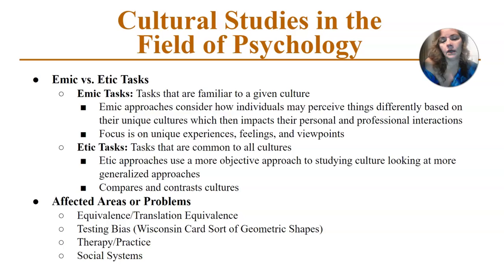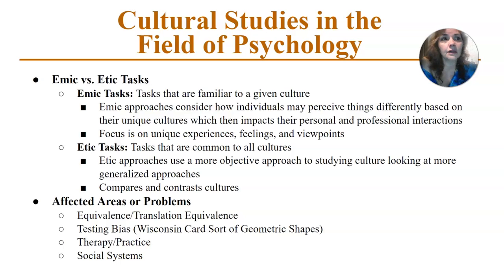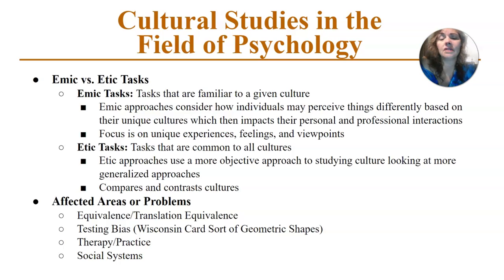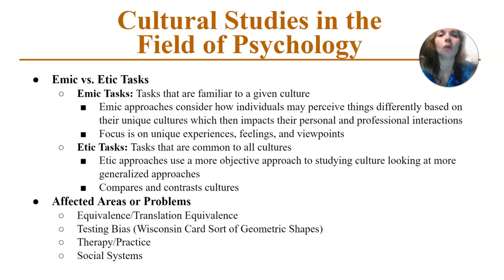Similarly, the Wisconsin Card Sort is used to assess problem solving in IQ assessments. Looking at geometric shapes can be a very foreign concept in some cultures, so there's bias there too. In fact, there's said to be bias in all of our IQ and intelligence testing. We've tried to make them culturally inclusive, even through APA multicultural guidelines, but they're still very limited. We have much more work to be done, though we do have trends toward being more culturally inclusive.